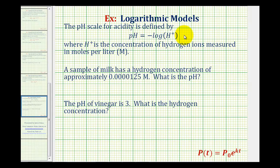One application of a log function is the pH scale. The pH scale measures the acidity of a substance and is defined by pH equals negative the common log of the concentration of hydrogen ions measured in moles per liter.